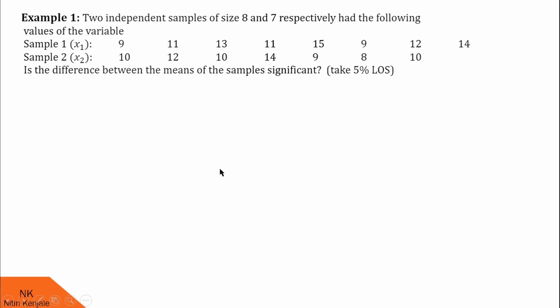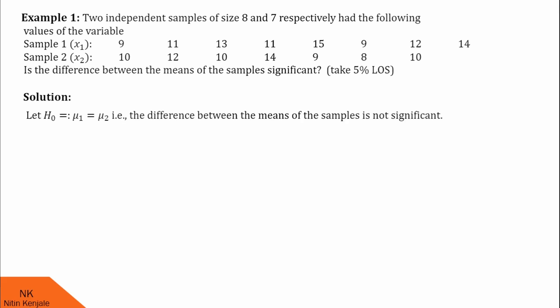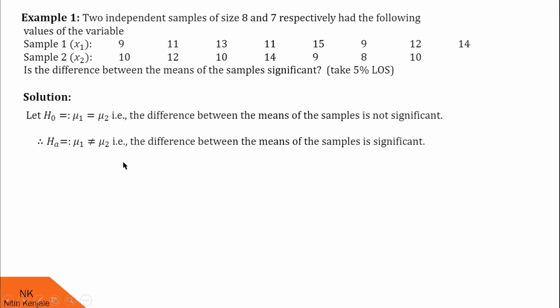Let us proceed for the solution. First, we define the null and alternative hypothesis. H0 states there is no significant difference between the means of two samples, that means mu1 equals mu2. The alternative hypothesis will be there is a significant difference between the means of two samples, that is mu1 is not equal to mu2. So, this is a two-tailed test.